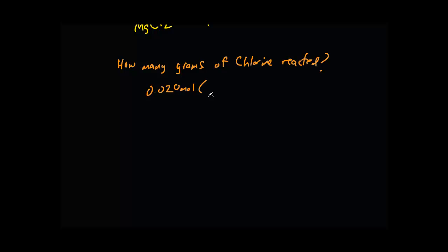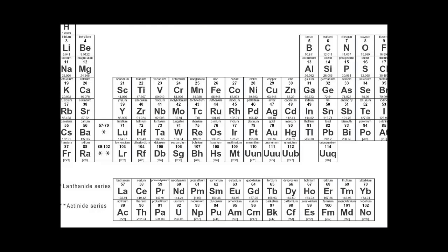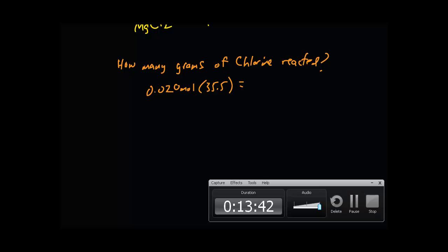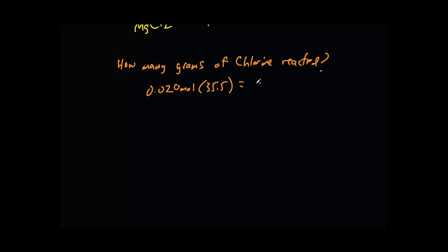Let's say we know that 0.020 moles of chlorine reacted, but they want grams. That's okay—you just multiply this by the atomic weight of chlorine, which is 35.5, and you're going to get around 0.71 grams.